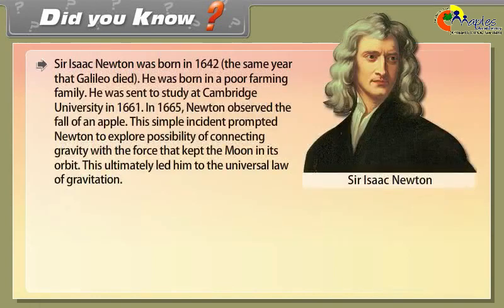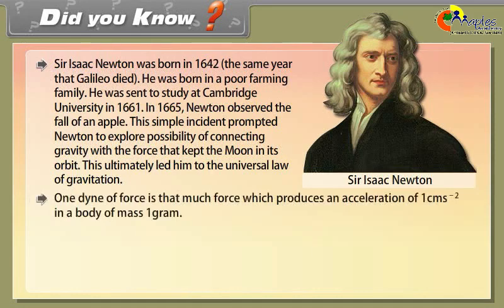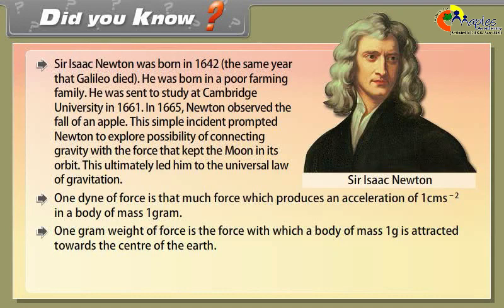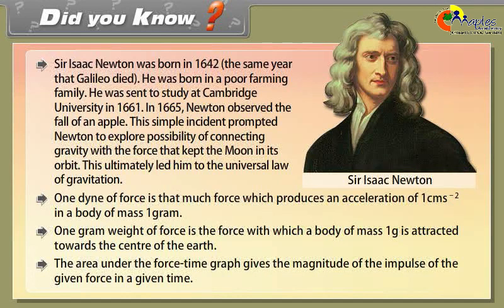Sir Isaac Newton was born in 1642, the same year Galileo died. From a poor farming family, he was sent to Cambridge University in 1661. In 1665, the fall of an apple prompted him to explore gravity, ultimately leading to the universal law of gravitation. One dyne of force produces an acceleration of 1 cm/s² in a mass of 1 gram. One gram-weight is the force attracting a 1-gram body toward Earth's centre. The area under a force-time graph gives the magnitude of impulse.